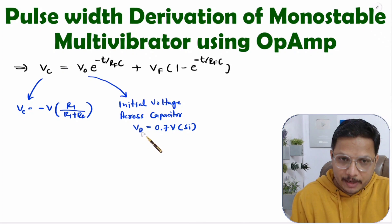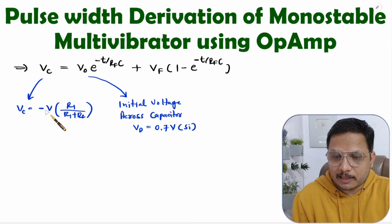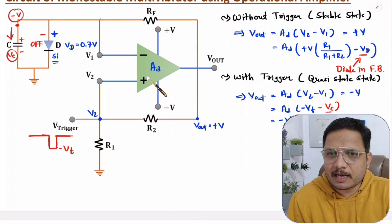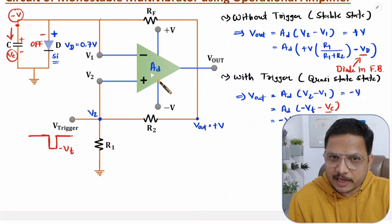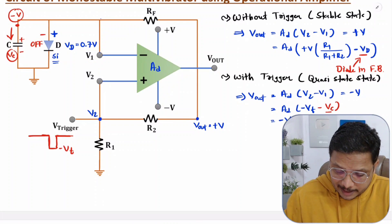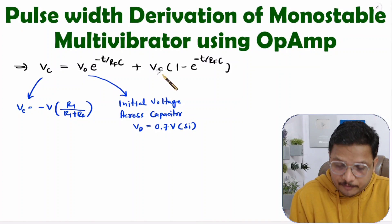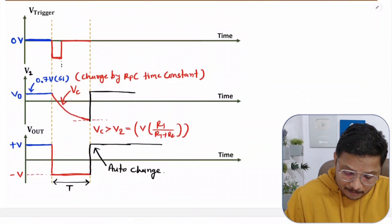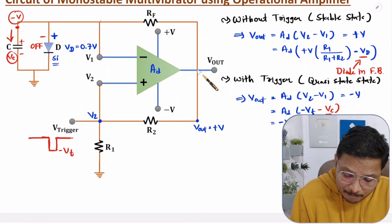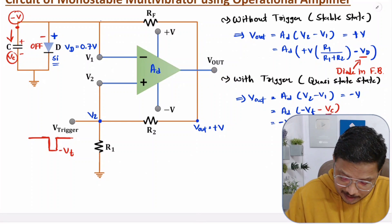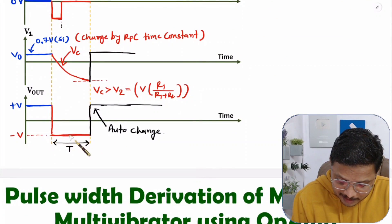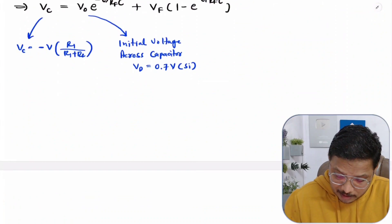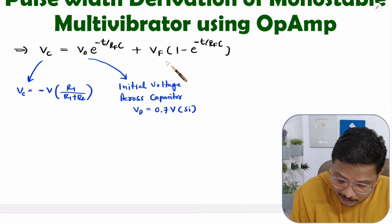This value of Vd is very small compared to the supply voltage V. The reason is that V is the biasing voltage of the op-amp — generally around 15 volts — so 15 is way greater compared to 0.7 volts. Now, VF is the final voltage toward which the capacitor is getting charged. Since the output is at −V, this capacitor is getting charged by that −V voltage, so the final voltage VF equals −V.